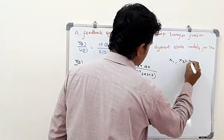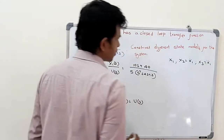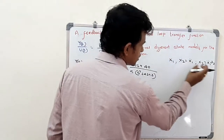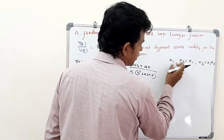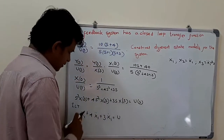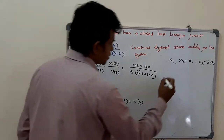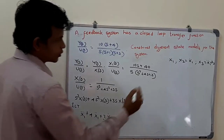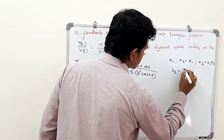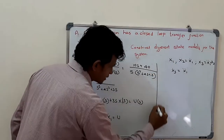So we have state variable x2 equal to x1 dot, and that equals x2 dot. x3 equals the double derivative of x1, which is the single derivative of x2, so x1 double dot equals x2 dot. Then x1 triple dot equals x3 dot.